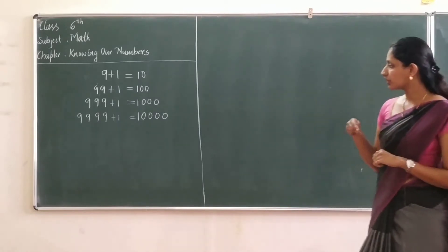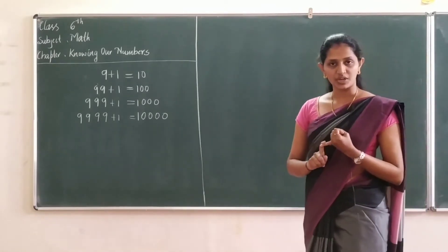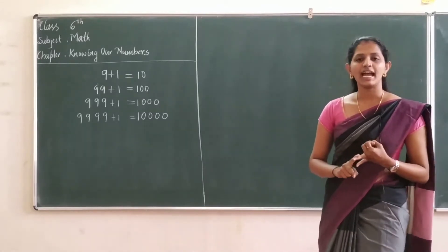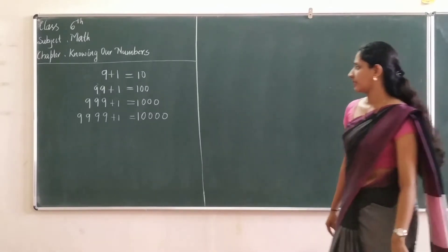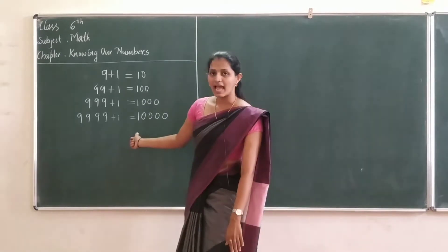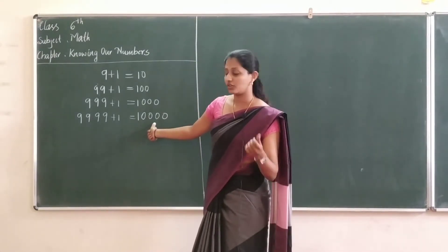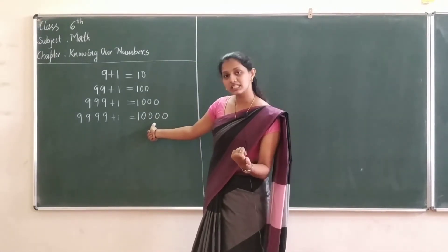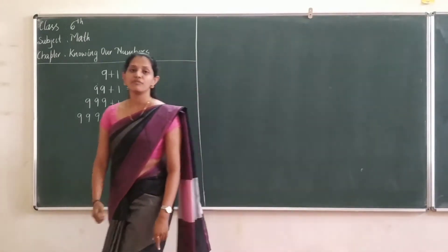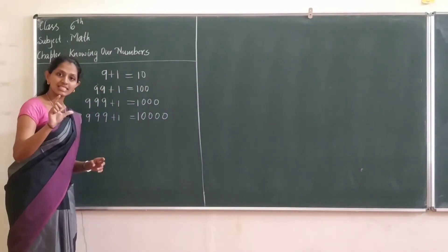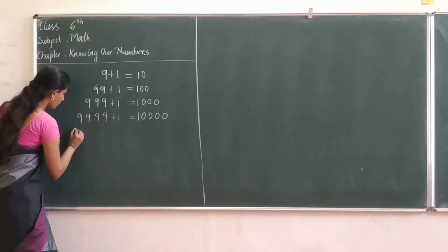So, we are going to learn about 6-digit numbers, 7-digit numbers, and 8-digit numbers. While we are adding 1 to the greatest 5-digit number, we will get the smallest 6-digit number.